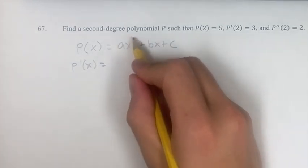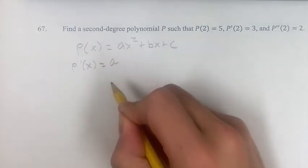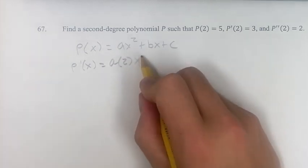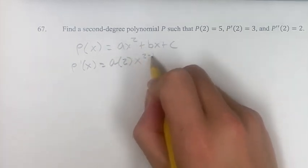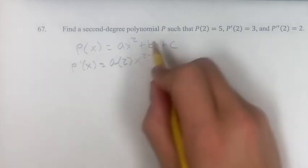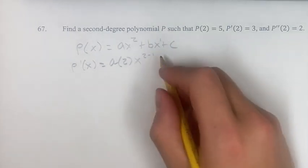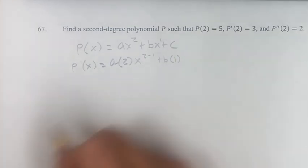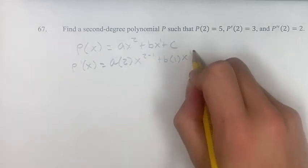The first derivative, looking at this form, we have A times the exponent, since we have a power function, times X to the 2 minus 1, subtracting 1 from the exponent to give your new exponent. We have BX to the first power, so we take the coefficient, we bring it out in front, multiply it by the exponent, and then your new exponent is the old one, minus 1.